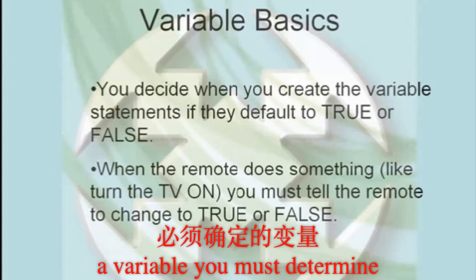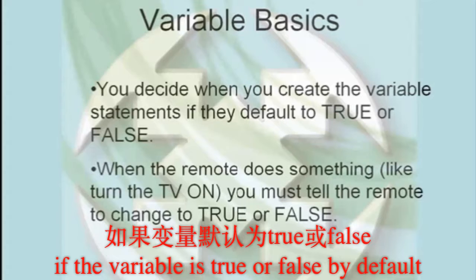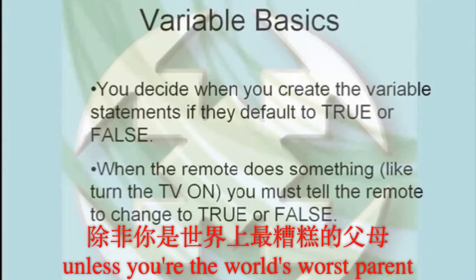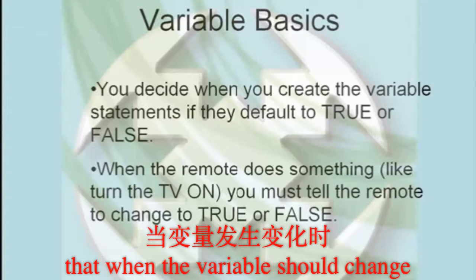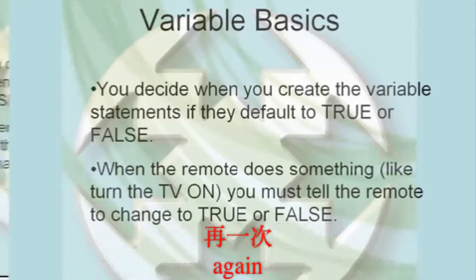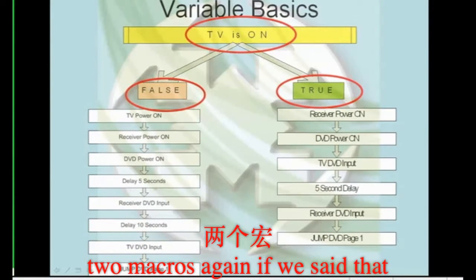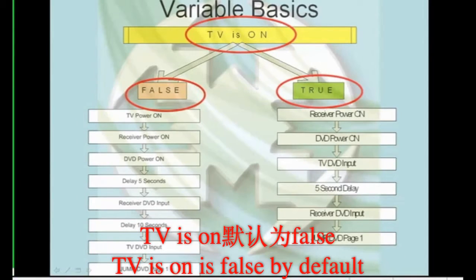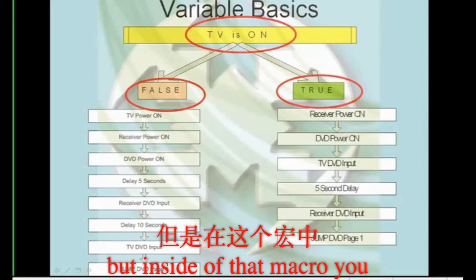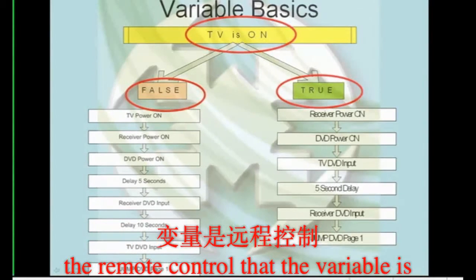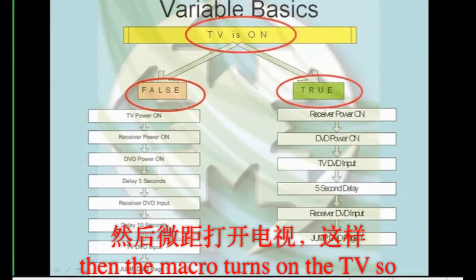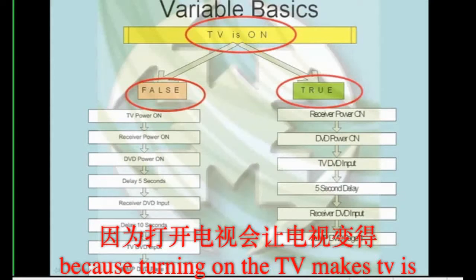Since a macro can be dependent upon a variable, you must determine if the variable is true or false by default. In the example of "TV is on," it makes sense to say this is a false statement by default because it's off more than it's on. The second part of this is to remember that when the variable should change — like when you do turn the TV on — you must also alert the remote control to the change from true to false or back again. If we said that the variable "TV is on" is false by default, the first time you hit the watch DVD button, the macro on the left would automatically go out. But inside of that macro, you turn the TV on. So you need to insert something to tell the remote control that the variable is now true. The variable is false by the default that you set. Then the macro turns on the TV, so you must change the variable to true, because turning on the TV makes TVIsOn true.